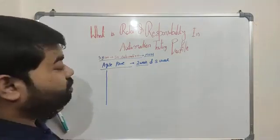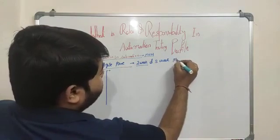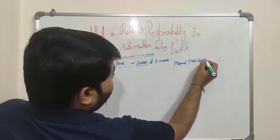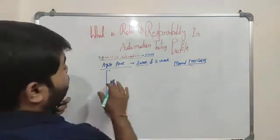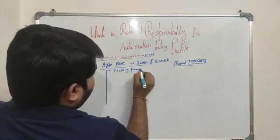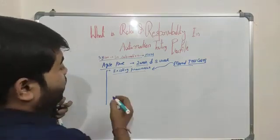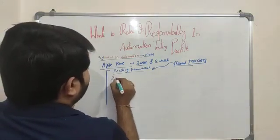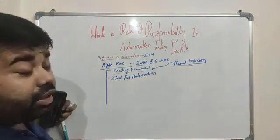In agile you will be assigned an automation card. We already have manual test cases, and you have to automate those manual test cases using the framework. You will have an existing framework. By using this framework you have to automate the manual test cases. In a two-week sprint, as per the complexity of the test cases, you might get two cards for automation.